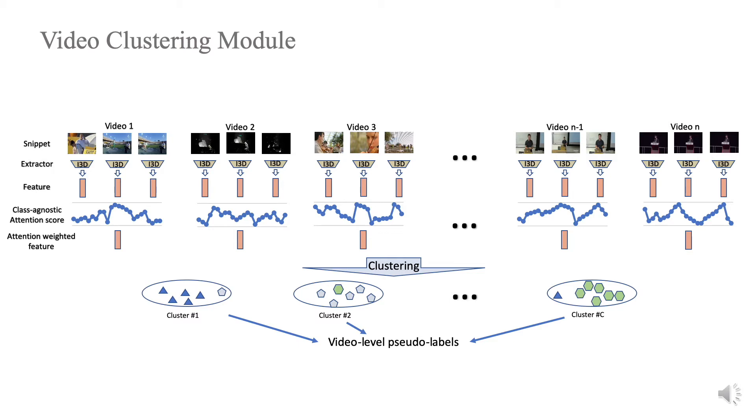we utilize the spectral clustering algorithm on the training set to obtain a set of clusters. Each video can be assigned with a pseudo-label according to the cluster it belongs to. Then the pseudo-labels are used to train action localization model.